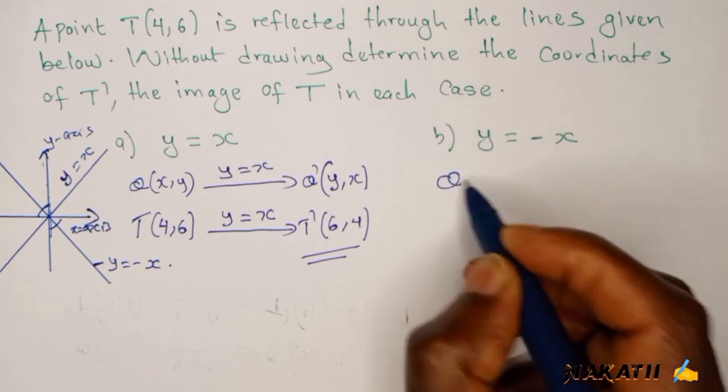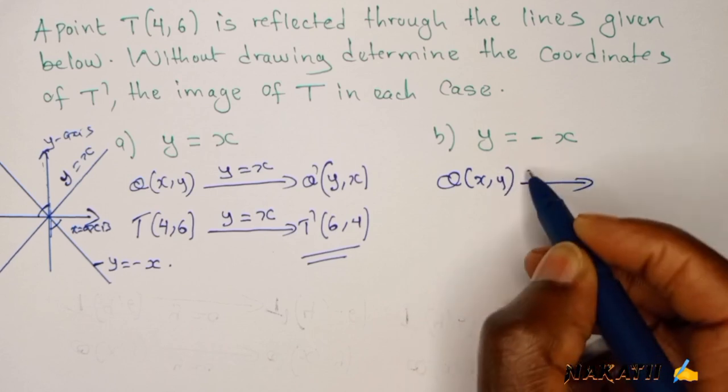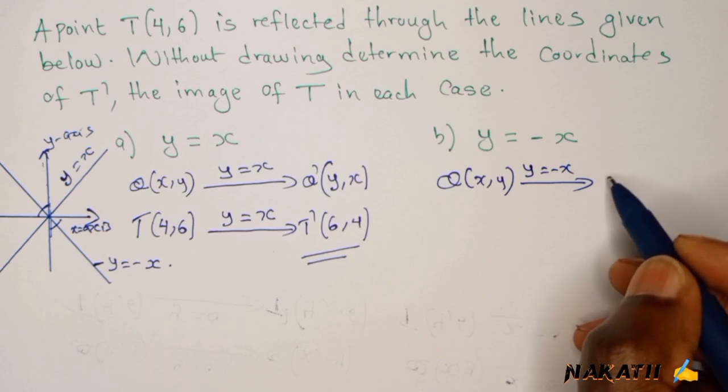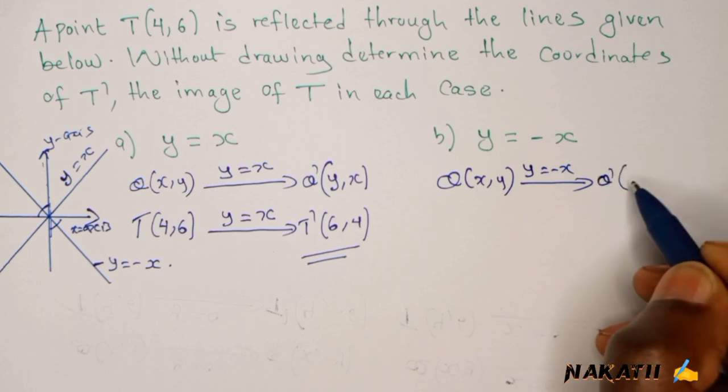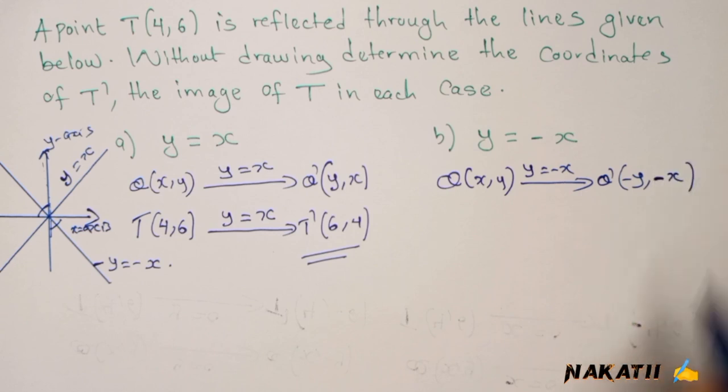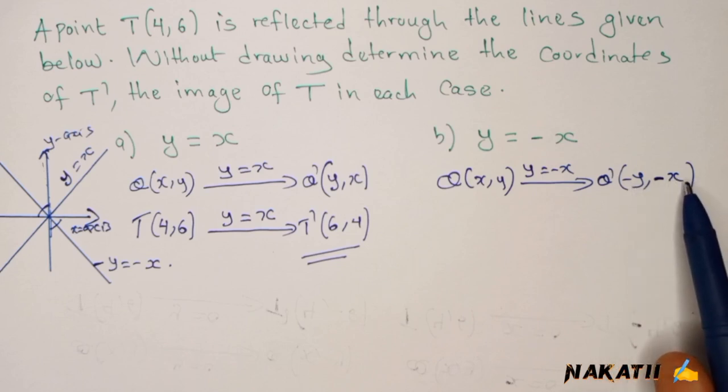If I reflect any point on this line, for example Q which is (x,y), you reflect on line y equals negative x, you just interchange the y and x coordinate together with their signs. So this is how you interchange: you bring the value of y and you change the sign, you also bring the value of x and you interchange the sign.